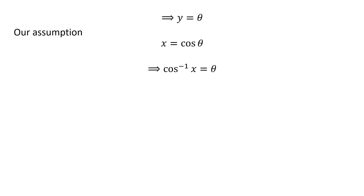As per our assumption, x is equal to cosine of theta. Applying inverse function properties implies theta is equal to the inverse cosine of x. So y is equal to the inverse cosine of x. Thus, the simplification of the inverse cotangent of x upon the square root of 1 minus x squared is the inverse cosine of x.